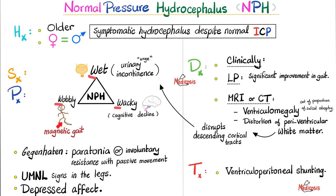The third W is wacky — cognitive decline. There is ventriculomegaly, sulcal atrophy, distortion of the periventricular white matter, thinning of the corpus callosum which connects the right hemisphere with the left hemisphere, and other features visible on MRI or CT scan. Usually MRI is better for these cases.